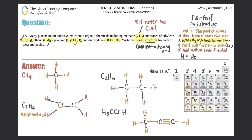Last but not least, diacetylene: HCCCCCH — one hydrogen, then four carbons in a row, then another hydrogen. Written in this long format, I just draw the blueprint left to right: one hydrogen on the left, four carbons in the middle, one hydrogen on the right. Each hydrogen has one valence electron, and each carbon has four, so I place the appropriate dots around each atom.